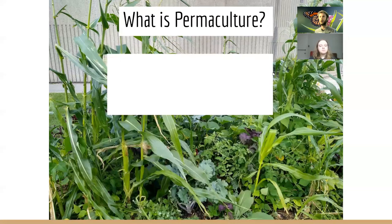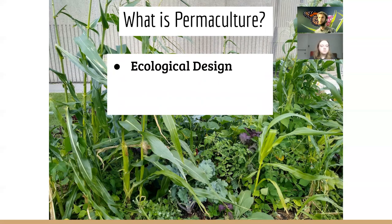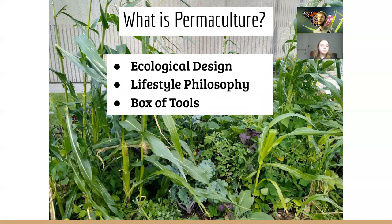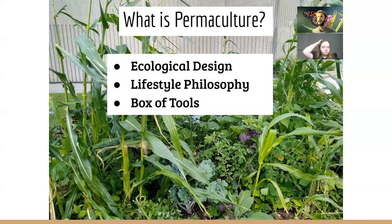What is permaculture? It can essentially be broken down into three things: it is an ecological design system, a lifestyle philosophy, and a box of tools, tricks, and tips you can use to make your lifestyle more sustainable. Permaculture started in the 1970s with Bill Mollison, an Australian who was studying with Aboriginal farmers. He learned through observing them that there are ways to exist in life that mimic nature, so permaculture is really ancient and traditional knowledge given a new spin.